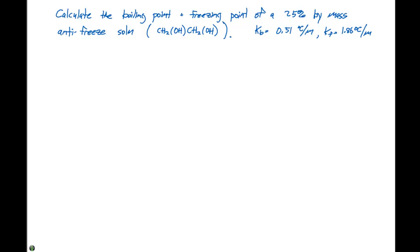In this example problem we're asked to calculate the boiling point and freezing point of a 25% by mass antifreeze solution. An antifreeze contains CH2OH CH2OH. We have a KB of 0.51 degrees Celsius per molal and a KF of 1.86 degrees Celsius per molal.